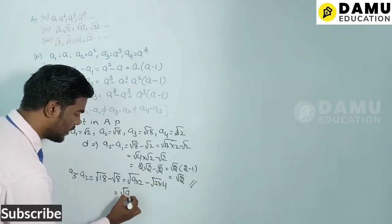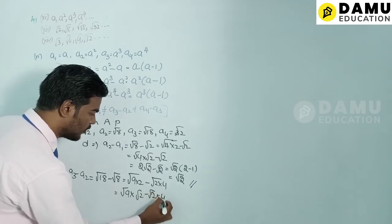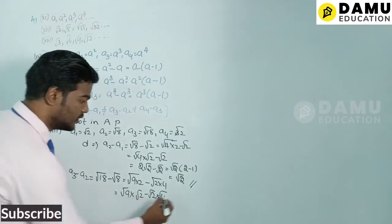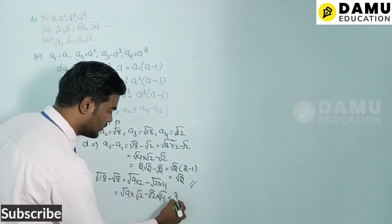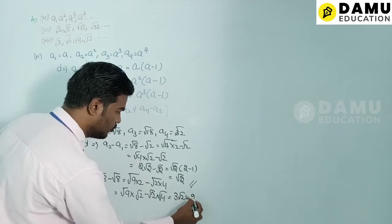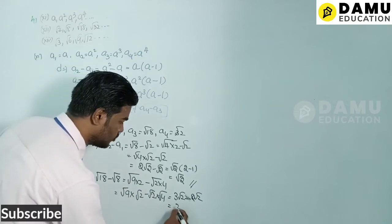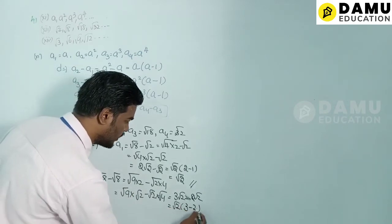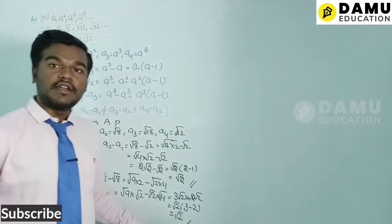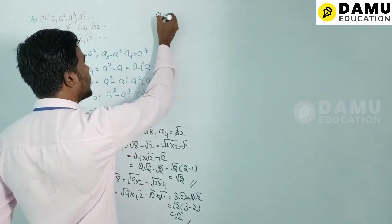Taking √2 as common: (3 − 2)√2 = √2. So the common difference is again √2.